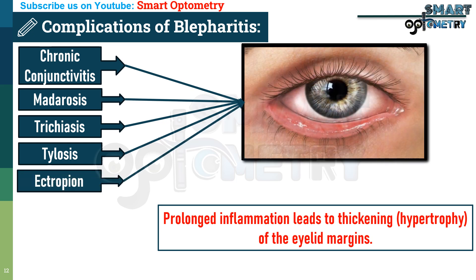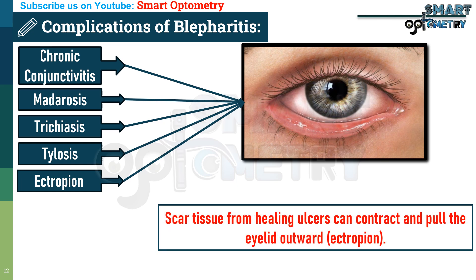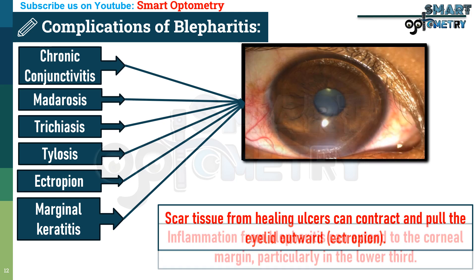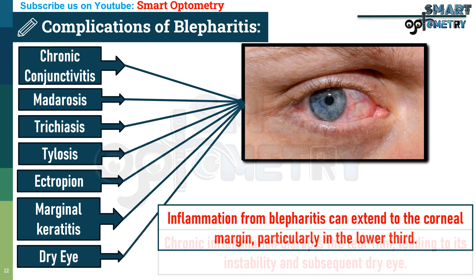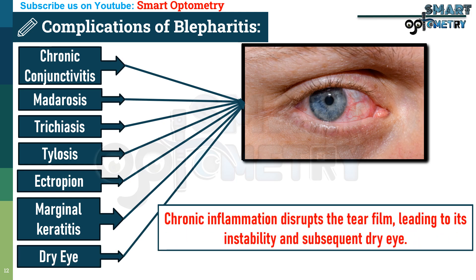Fifth: ectropion — outward turning of the lid margin. Scar tissue from healing ulcers can contract and pull the eyelid outward, leading to poor tear drainage and epiphora. Sixth: marginal keratitis — inflammation from blepharitis can extend to the corneal margin, particularly the lower third, causing localized keratitis that may compromise corneal integrity. Seventh: dry eye — chronic inflammation disrupts the tear film, leading to instability and dry eye symptoms due to insufficient or poor-quality tears.